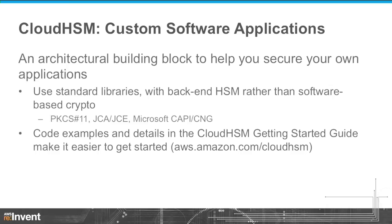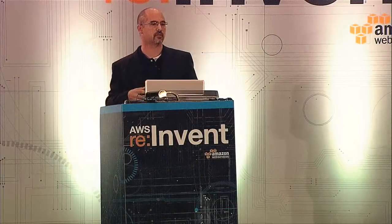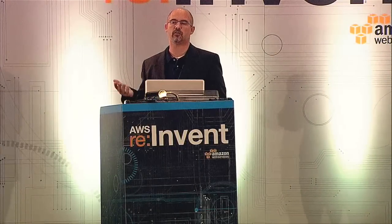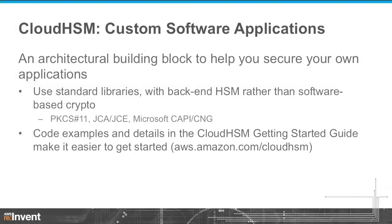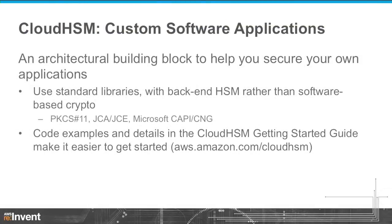I've talked a lot about applications and existing services that integrate with Cloud HSM, but a lot of Cloud HSM customers are also building their own custom applications using Cloud HSM as a building block. One aspect that makes it easier than you may think: if you're using existing standard crypto libraries like PKCS#11, Java JCA/JCE, or CNG, those standard libraries all have equivalent SafeNet libraries that proxy those crypto calls to the HSM. You can more or less drop and replace your existing crypto libraries with these proxy libraries. We have code examples in the AWS Cloud HSM Getting Started Guide.